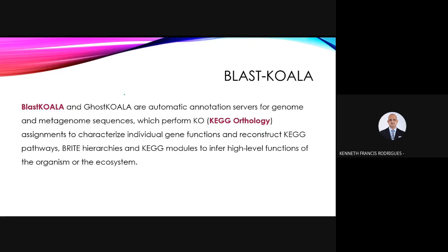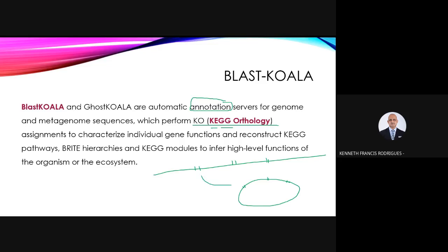BLAST KOALA and GHOST KOALA are both annotation servers that compare your genome and look for genes associated with pathways based on the KEGG — the Kyoto Encyclopedia of Genes and Genomes — orthology. When you have your genome with identified genes, KEGG links these genes to a specific biochemical pathway. For example, you have the non-ribosomal peptide biosynthesis pathway based on polyketide synthase — if you identify genes associated with that pathway, you will know that pathway exists in your bacterium.